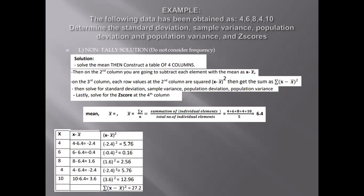For the third column, square the values from the second column. Negative 2.4 squared gives us 5.76. Negative 0.4 squared gives us 0.16. 1.6 squared gives us 2.56. Negative 2.4 squared gives us 5.76. Adding up all the values from 5.76 to 12.96 gives us 27.2.